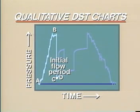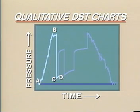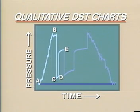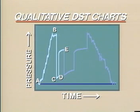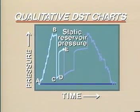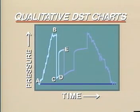The tool is then closed, and the initial shut-in period, with a duration of 30 to 60 minutes, takes place from D to E. Surface indications of flow cease. The pressure builds up, approaching the static reservoir pressure at point E without the effect of supercharging.